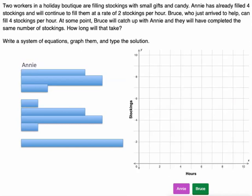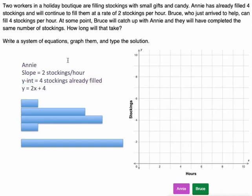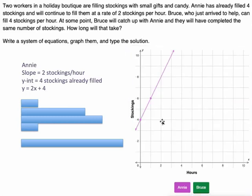So let's talk about Annie first. Annie is working at a rate of two stockings per hour. That's like a slope. She started with four stockings already filled before Bruce got there. And so we can write an equation for that situation. Y equals 2X plus 4. So when we graph it, we're going to have a y-intercept of 4 and a slope of 2. So there's our y-intercept of 4. Slope of 2 means up 2 over 1.